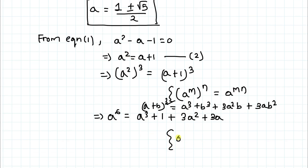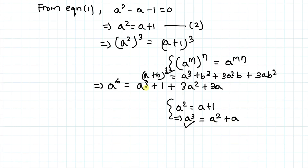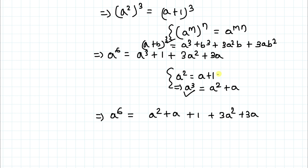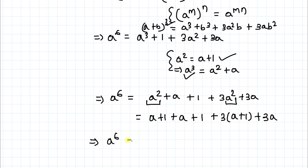From equation 2, a² = a + 1. Multiplying both sides by a gives a³ = a² + a. Substituting these values: a⁶ = (a² + a) + 1 + 3a² + 3a. Then substituting a² = a + 1 again: a⁶ = (a + 1) + (a + 1) + (a + 1) + 3a, which simplifies to a⁶ = 8a + 5.